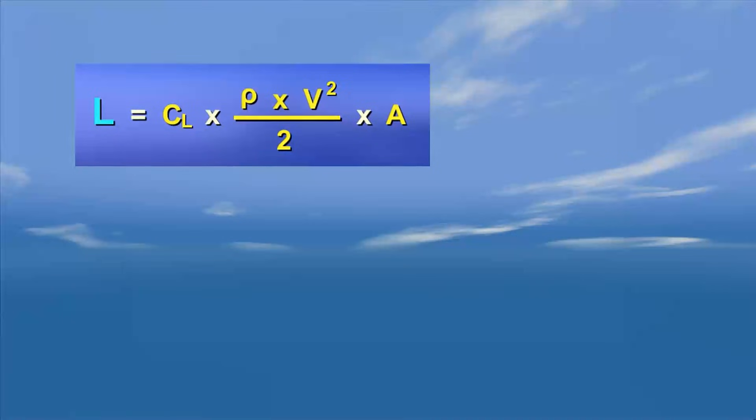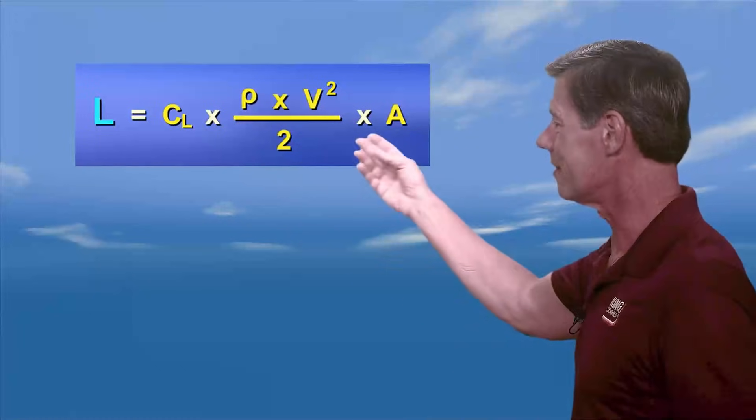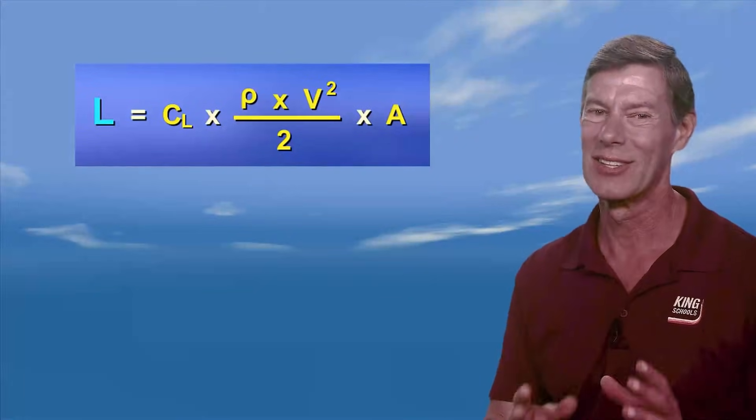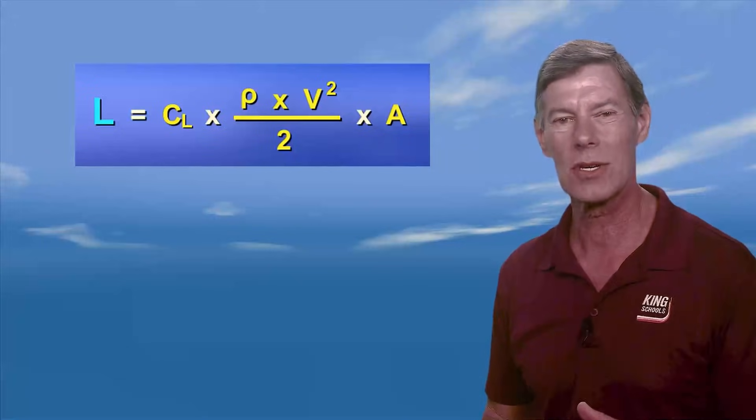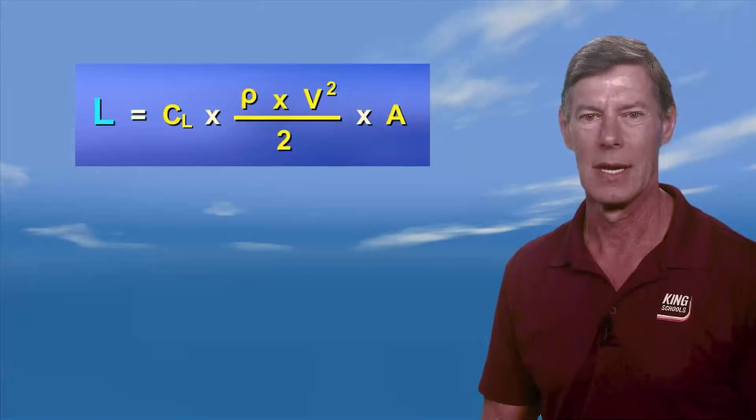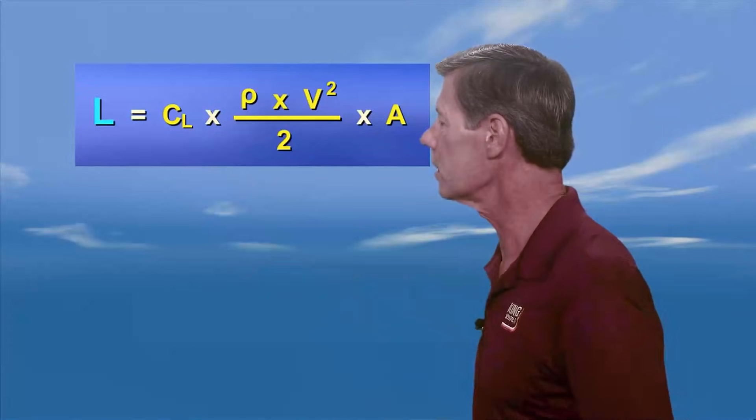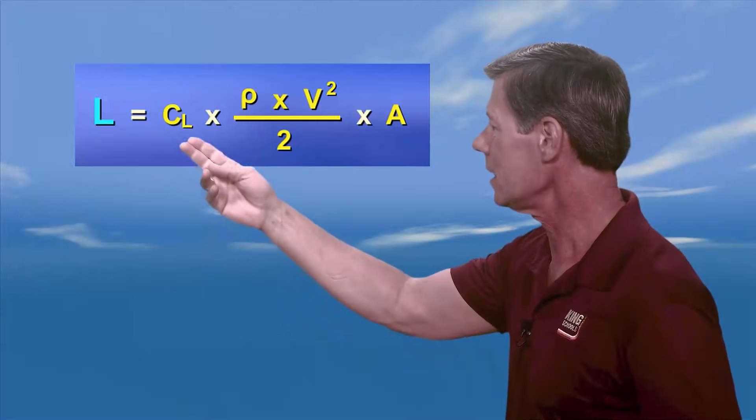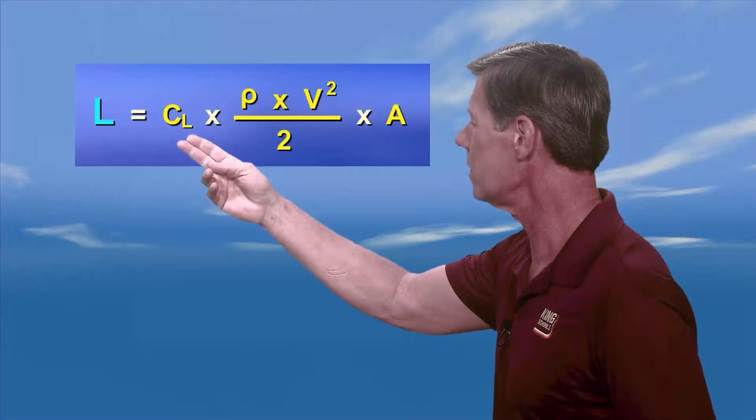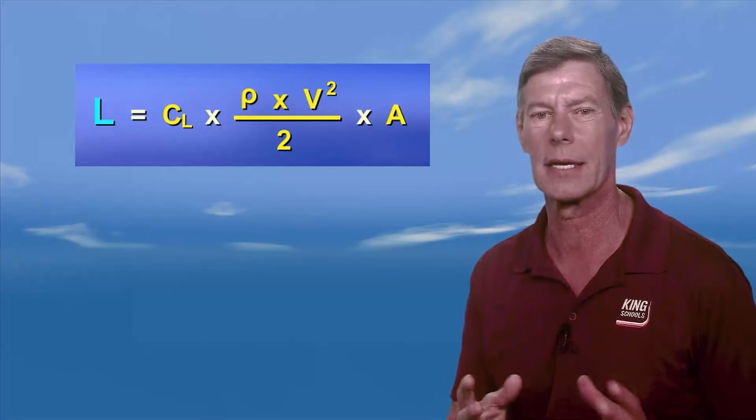Now let's wrap this up by looking at an equation that calculates lift. Don't panic, there's no test on this, but it's good for pilots to have a basic understanding of what it means. L is the amount of lift force that we're solving the equation for. C sub L is for the coefficient of lift, which is the variable for the wing shape, the angle of attack, and other factors.